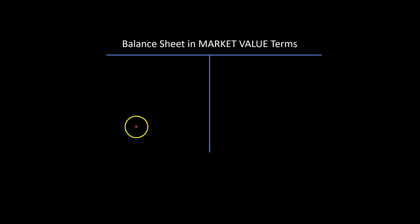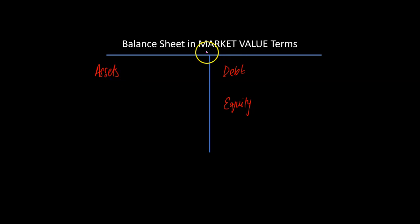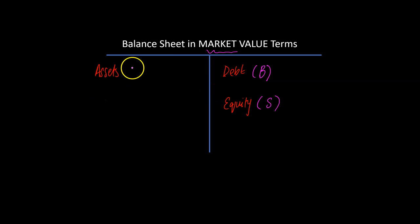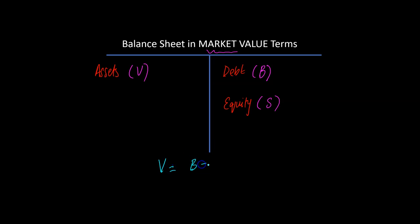Here is a quick way to visualize the problem. You have a firm which has some debt, some equity, and those debt and equity are used to fund some assets. I'm depicting this balance sheet in market value terms. I'll use the symbol B, short for bonds, to denote the market value of debt, and S to denote the market value of equity, and V, short for value, to denote the value of all assets. The balance sheet always balances, which means V equals B plus S — the value of all assets equals the sum of the market value of debt and the market value of equity.